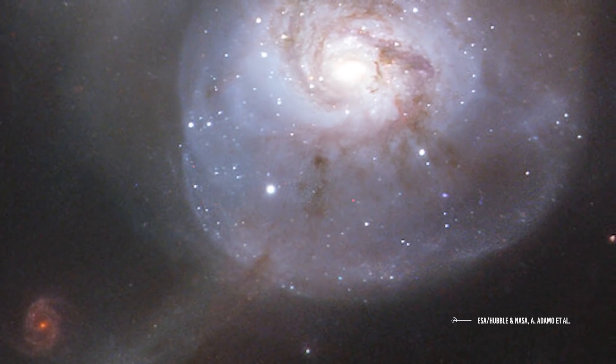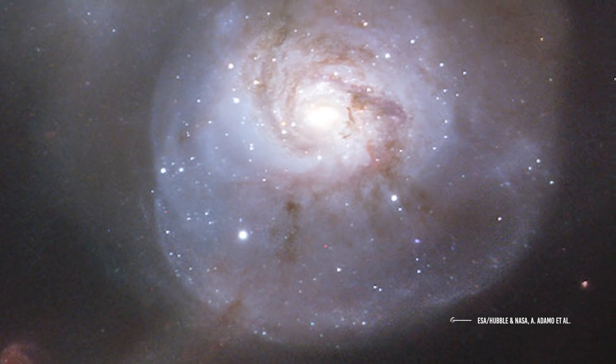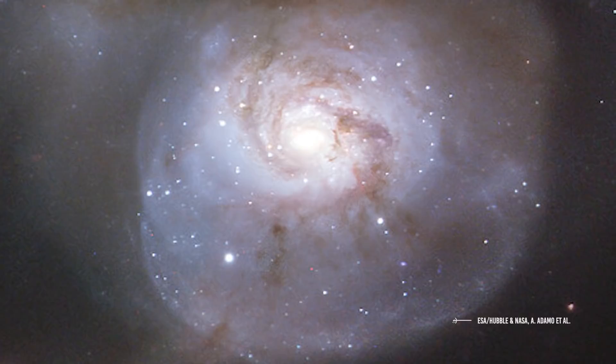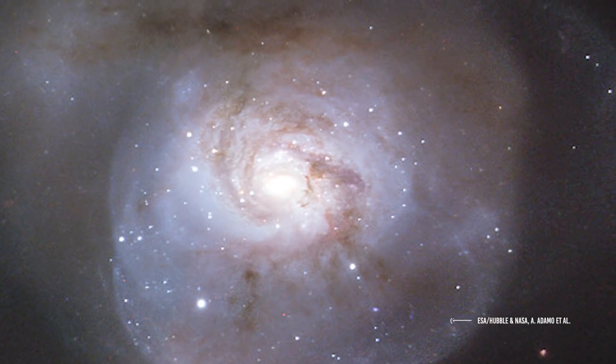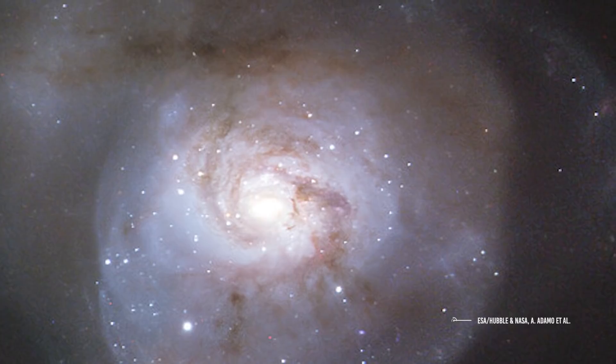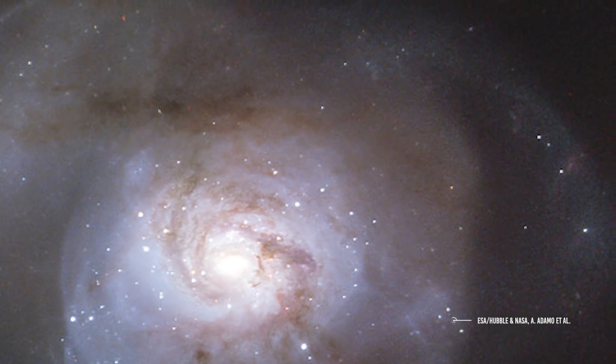This image shows the galaxy's bright center, a result of this merging event that has created a burst of new star formation and lit up the surrounding gas. As the galaxies continue to intertwine and become one, NGC 34's shape will become more like that of a peculiar galaxy, devoid of any distinct shape.